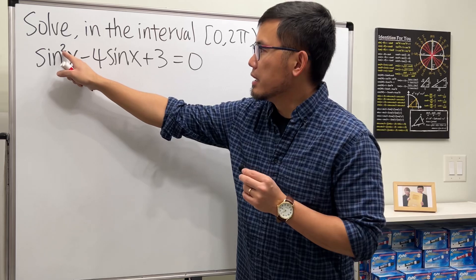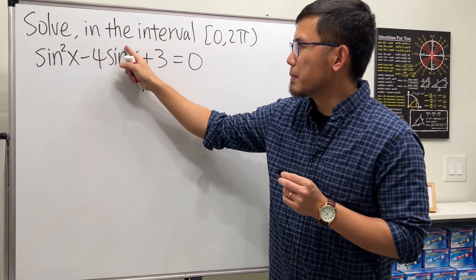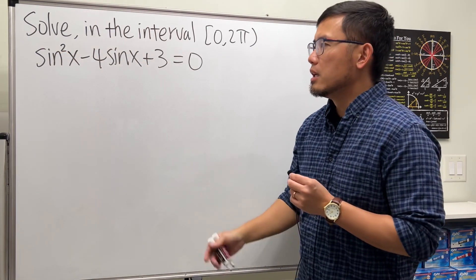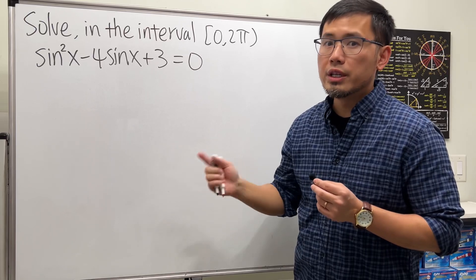The key here is we have the squared, here is the first power, and there's no sine here. So this is actually a quadratic equation in terms of sine.